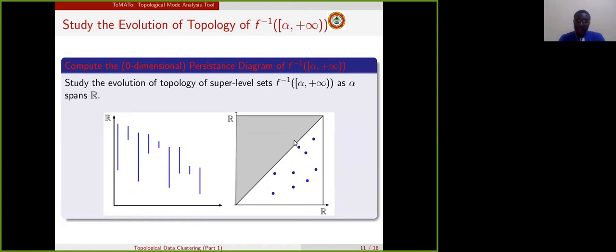Mathematically speaking, we say that we have studied the evolution of the topology of the pre-image of the function 0 to infinity on the function alpha to infinity. And to study that evolution of the topology, we compute the zero-dimensional persistent diagram of that pre-image.